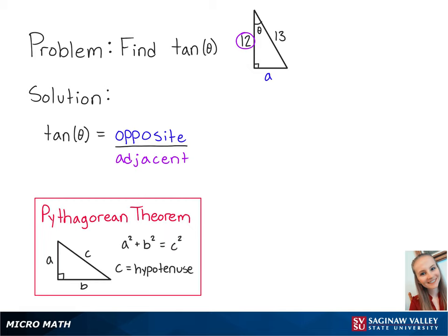Plugging in our values, we get A squared plus 12 squared equals 13 squared. Taking the square of 12 and 13, we get A squared plus 144 equals 169. Next, we'll subtract 144 from both sides so that we have A squared equals 25.